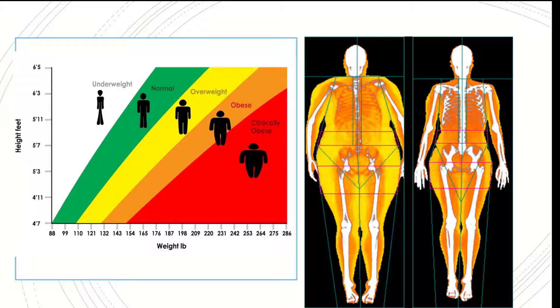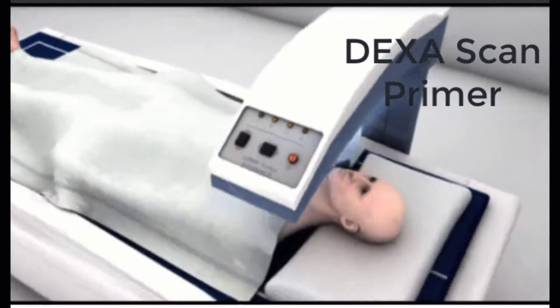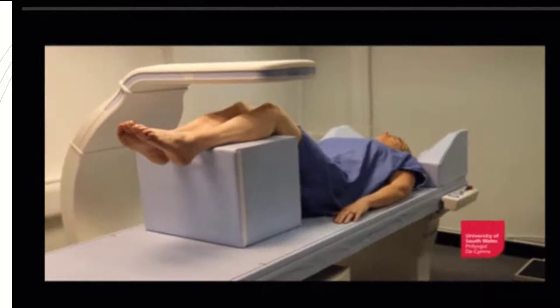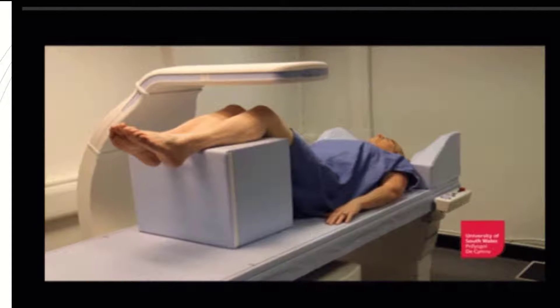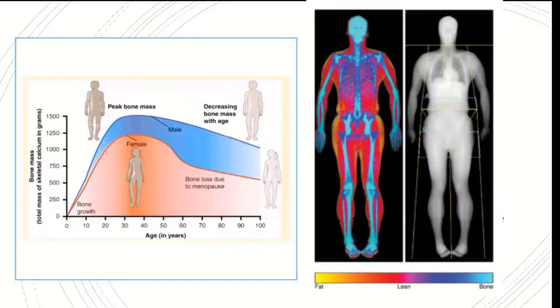Although DEXA can quantify the changes in tissue within the body, the primary applications of DEXA remain quantitative diagnosis of osteoporosis and the prediction of the risk of fracture. Another use for DEXA is the analysis of body composition. In fact, DEXA is considered by some to be the gold standard, having replaced underwater weighing for measuring body composition. There are many applications for measuring body composition which range from sports medicine to monitoring patients' changes in lifestyle, diet, or metabolic processes.